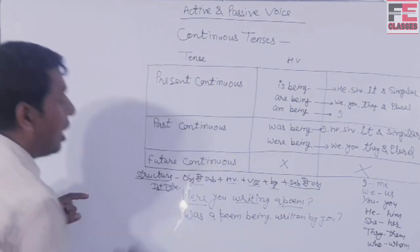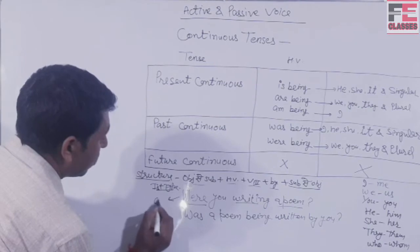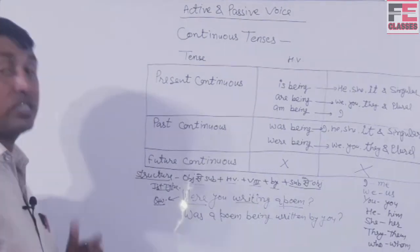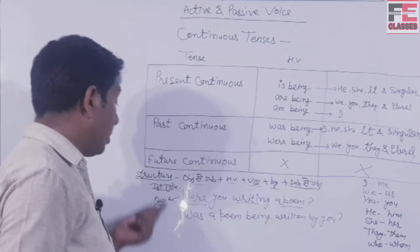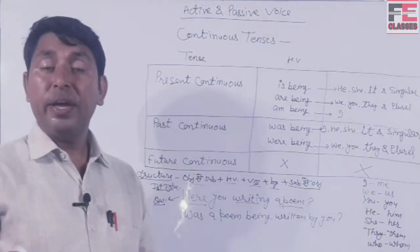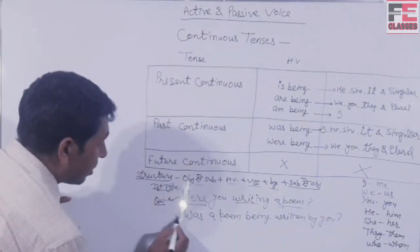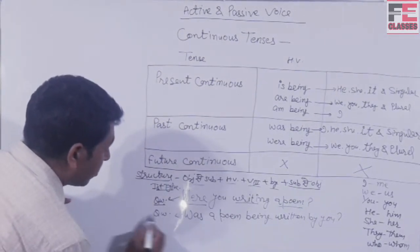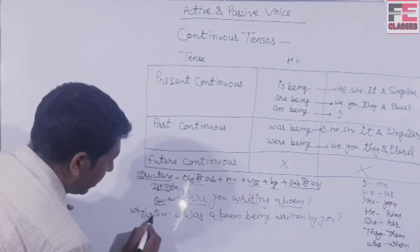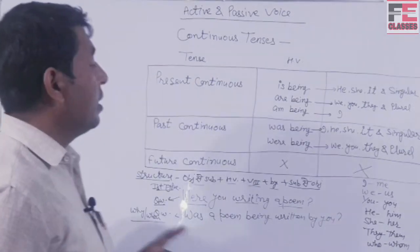Second type interrogative में question word पहले आता है — प्रश्नवाचक शब्द। जैसे why, when, where। Example: 'Why were you writing a poem?' या 'When were you writing a poem?' — इससे पहले question word लगा देते हैं।